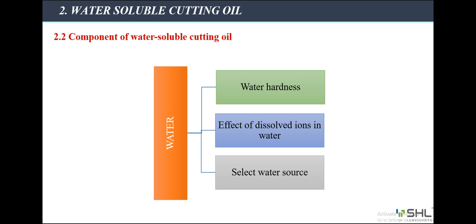Sulfate ions, although not as problematic as chloride, also cause problems with the rust resistance of cutting oils and speed up the formation and growth of bacteria. When the content of sulfate ions exceeds 100 ppm, it requires greater oil concentration to control corrosion and microorganisms. Phosphate ions contribute to total alkalinity and stimulate microbial growth, leading to skin irritation and odor problems.